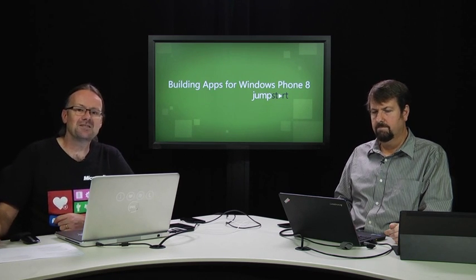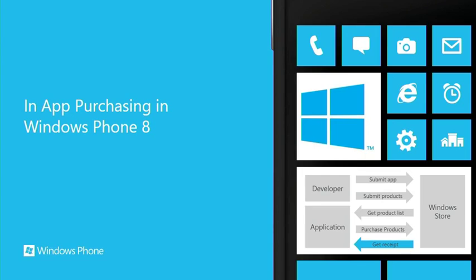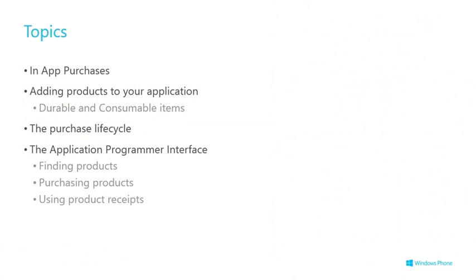So let's get straight into this one — in-app purchasing for Windows Phone 8. What we're going to talk about is what kind of things you can offer for in-app purchase, the kind of products that you offer, which are just two types: durables and consumables. I'll explain what they are, plus the whole purchase lifecycle and how you program your application to work with in-app purchase.